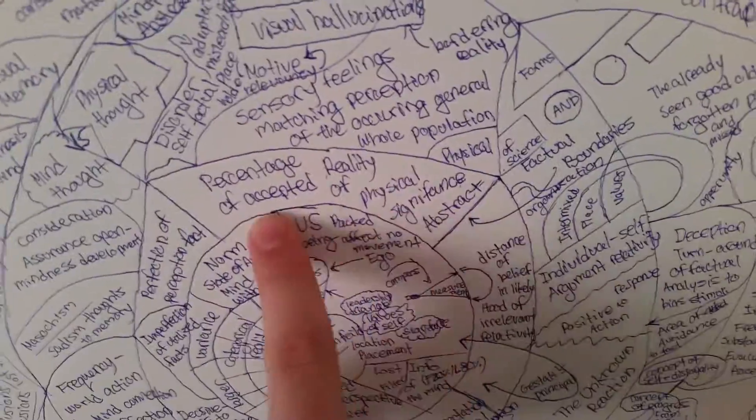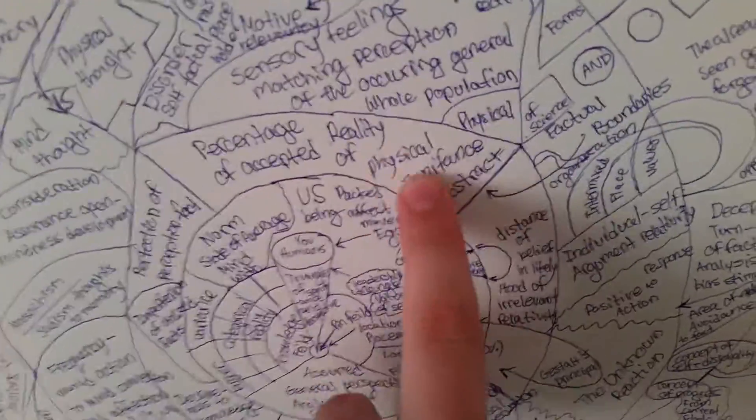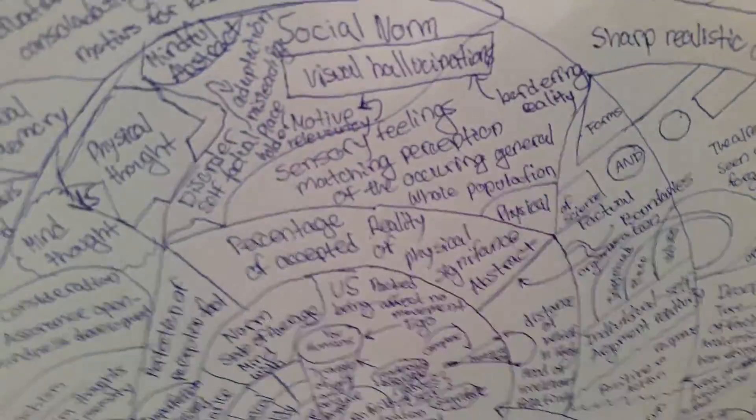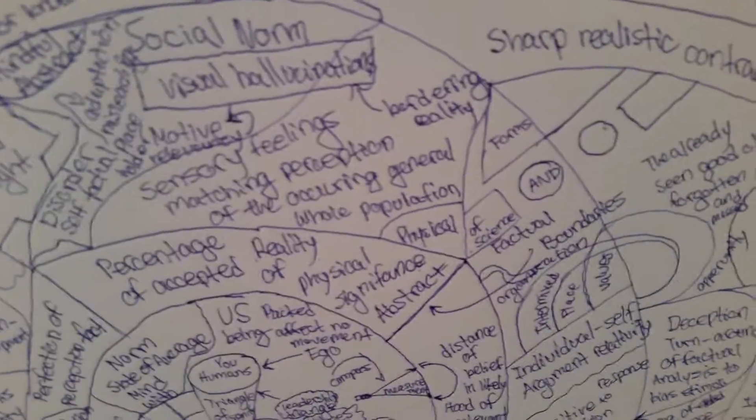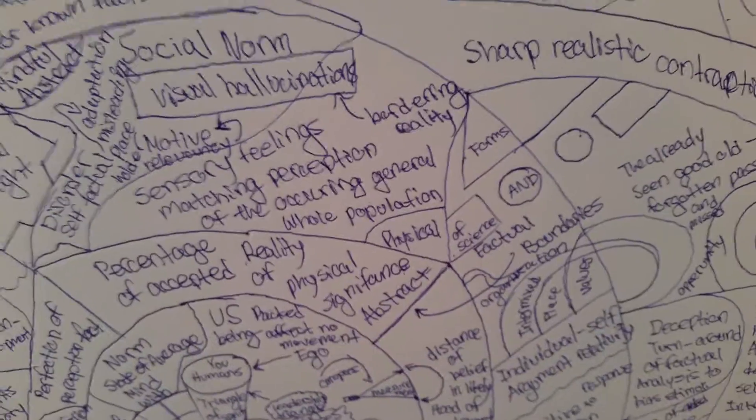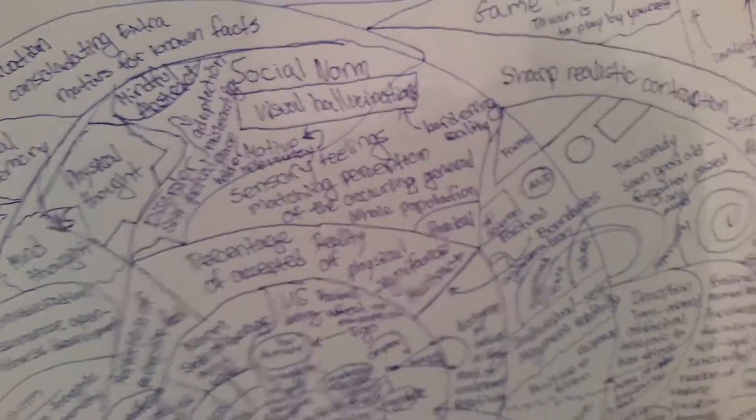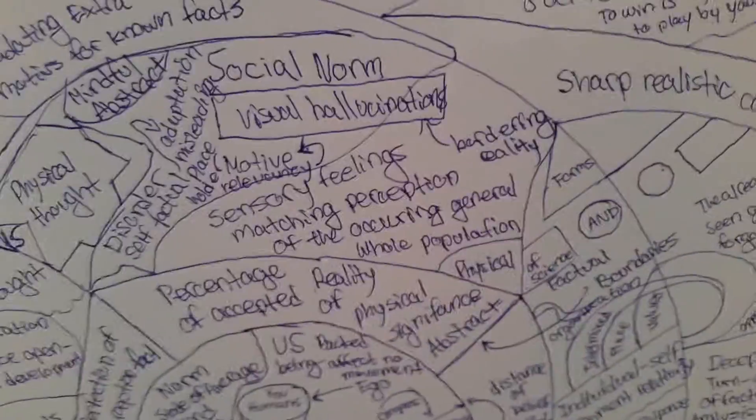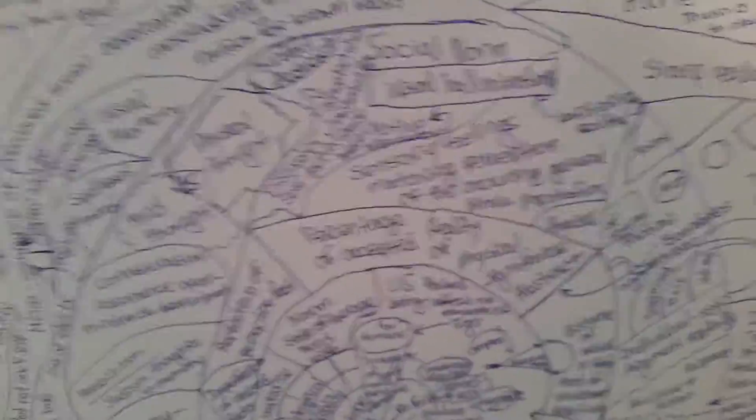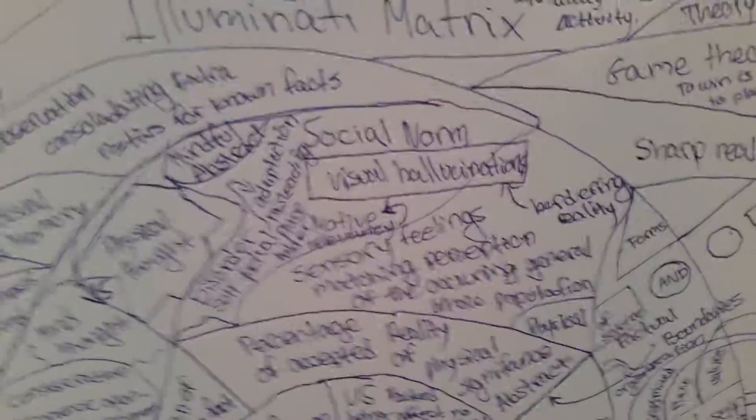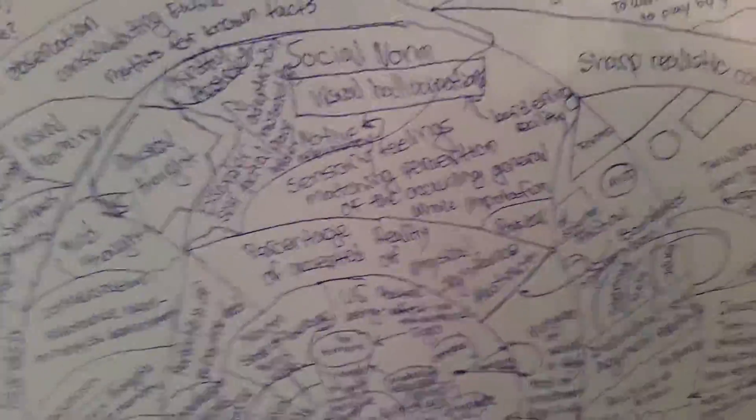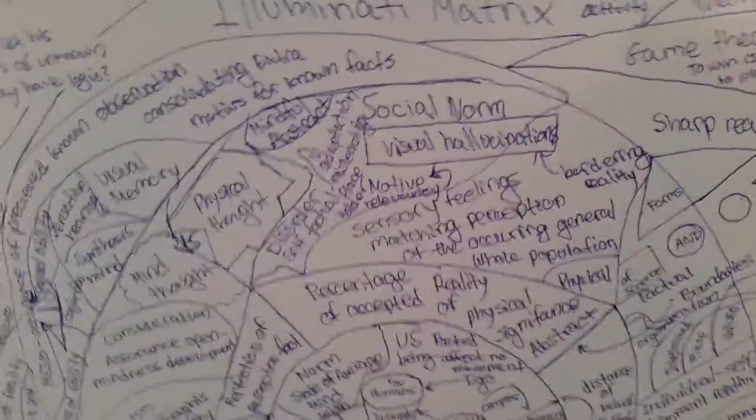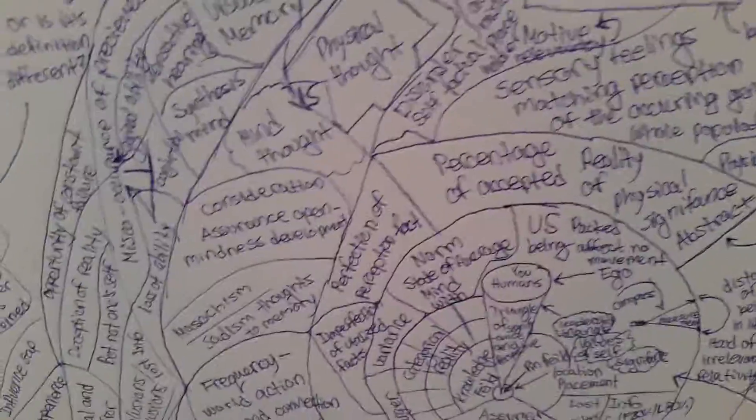So if you advance to perception reality of accepted reality of physical significant abstraction, you will go into sensory feelings matching perception of the occurring general whole population, the physical association, so physical desires bordering reality. And that is when you start to hallucinate because you became a little bit too biased with the idea of moving things just on a materialistic basis. Now that's kind of what it leads to. It's kind of obvious if you think about it, but it gets harder, it gets much harder.